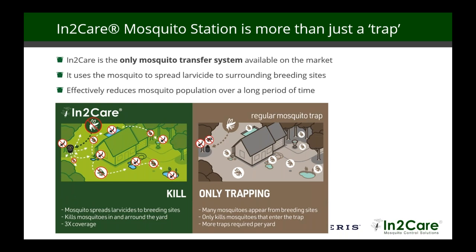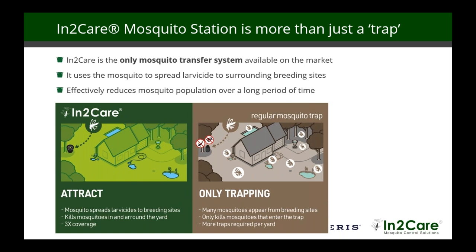Once the female mosquito goes into the station, 100% of her eggs without exception will die — larvae will not become biting adults. Most stations kill the mosquitoes that go into that particular station, but IntuCare allows her to leave. Now she's infecting all those other spots you can't get to. After she affects those areas, she dies. It's a very effective process, and many PMPs are already using this successfully throughout the country, as opposed to using just a standard trap, which will not take the active ingredient out anywhere else.